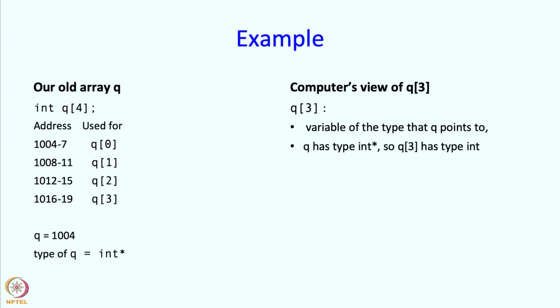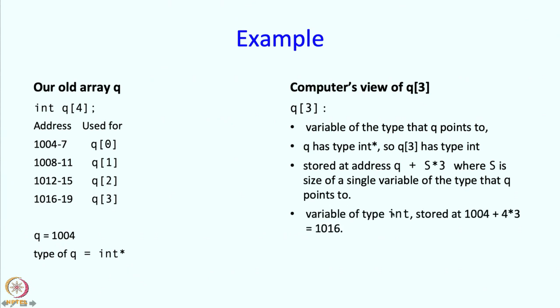And q has type int star, so q3 has type int. It is stored at address q plus s times 3, where s is the size of a single variable of the type that q points to. In other words, it is a variable of type int, and it is stored at q which is 1004, plus s which is 4 times 3, so 1016. So it is indeed what we think of as q3.